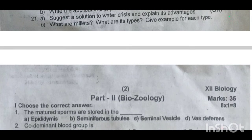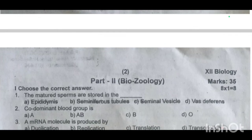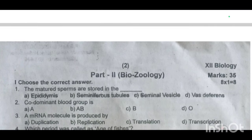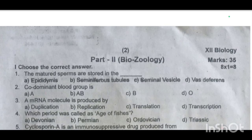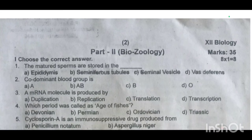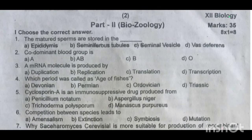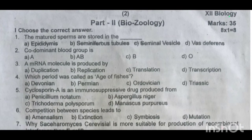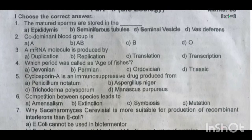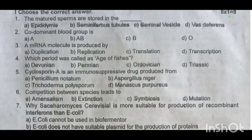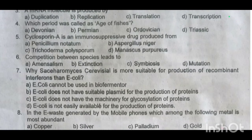Next one is zoology. One-mark questions: First one, mature sperms are stored in the dash. Second one, co-dominant blood group is dash. Third one, an mRNA molecule is produced by dash. Fourth one, which period was called the age of fishes? Fifth one, cyclosporine is an immunosuppressive drug produced from dash. Sixth one, competition between species leads to dash. Seventh one, why is yeast cell more suitable for production of recombinant interferon than E. coli? Eighth one, in the e-waste generated by mobile phones, which among the following metals is most abundant?